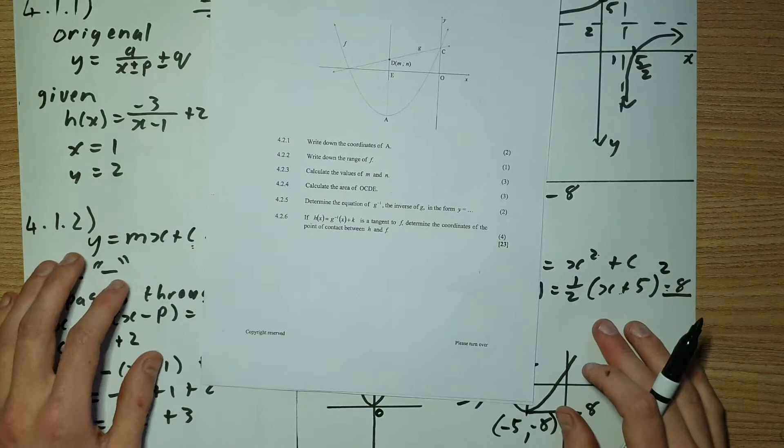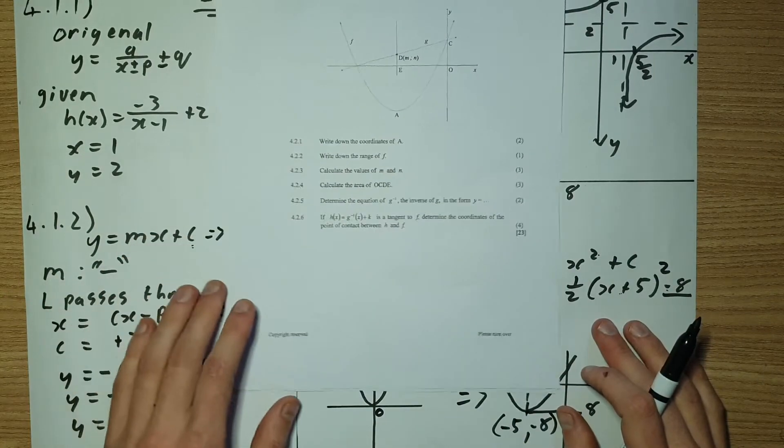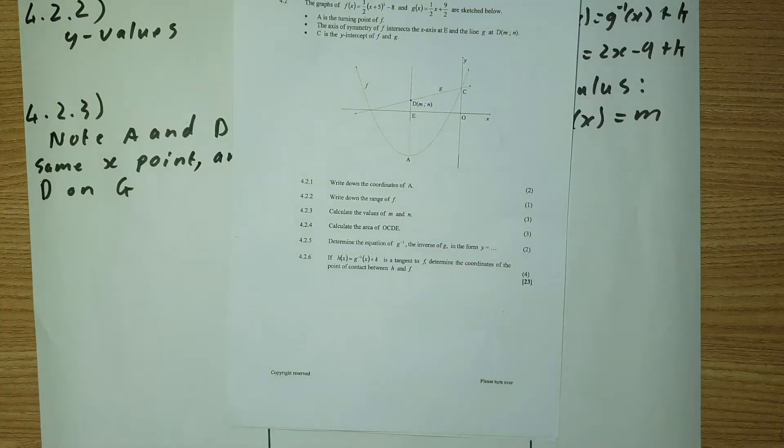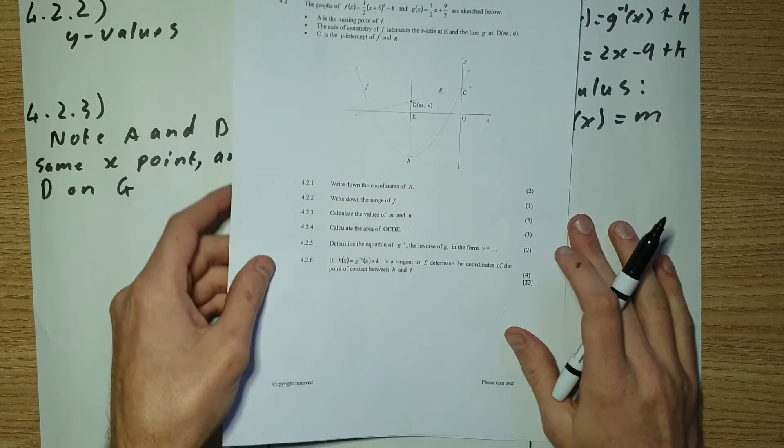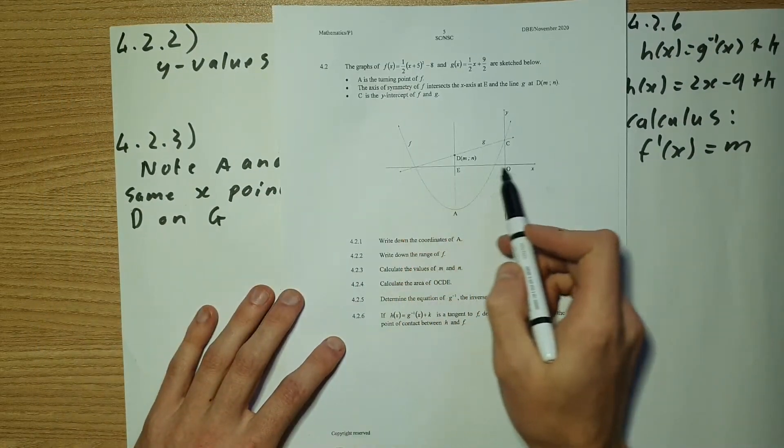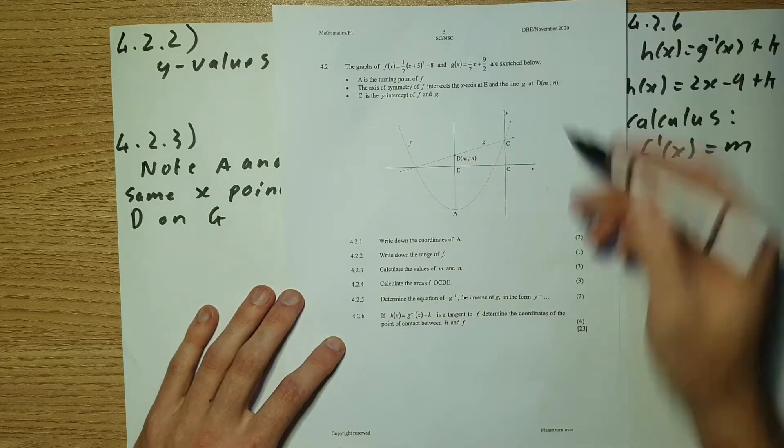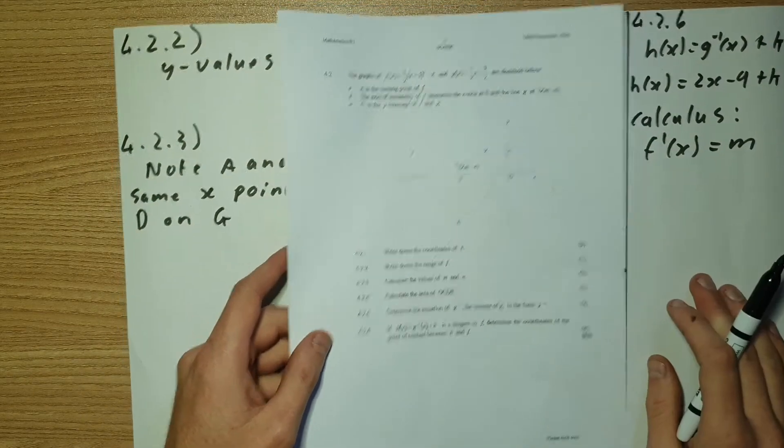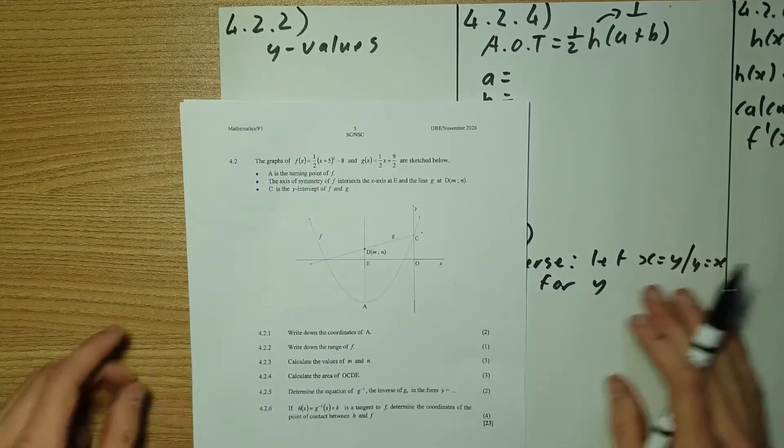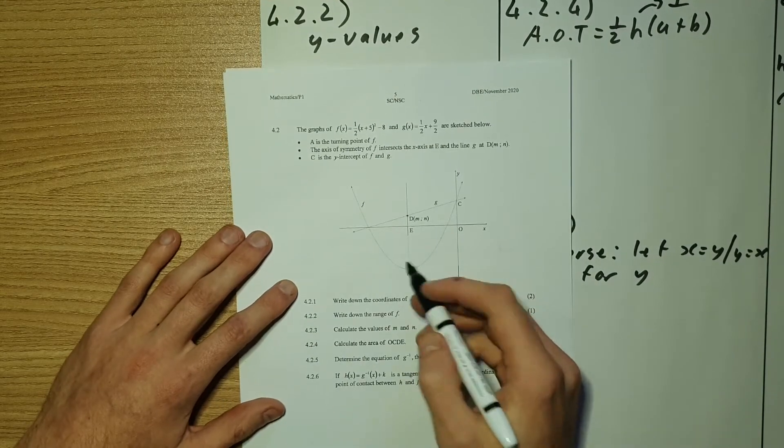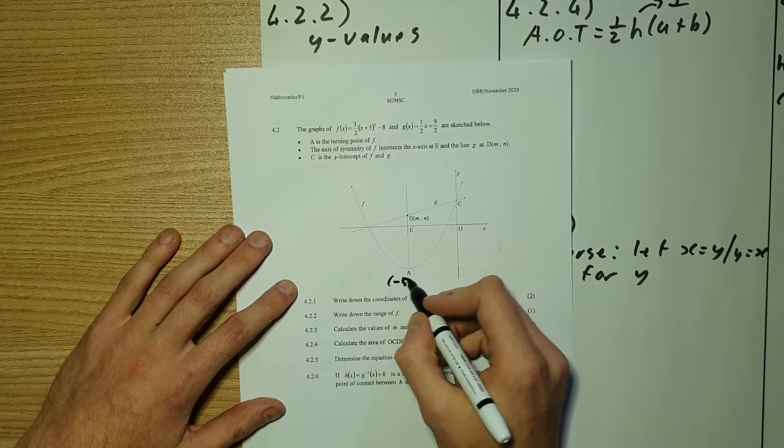Then 4.2.2 says write down the range of f. Now, remember, the range of f always deals with y values. So think about a shooting range, we're standing on the x, we're looking down y. So to find out what the range is, we'll find the lowest value on our graph. So we said that this was negative 5, negative 8.